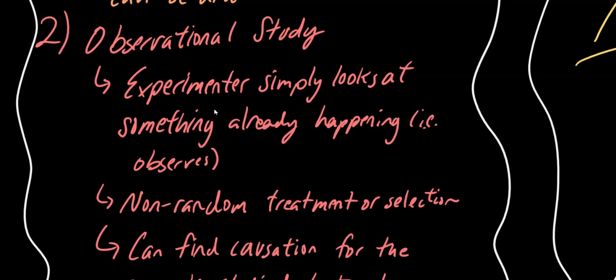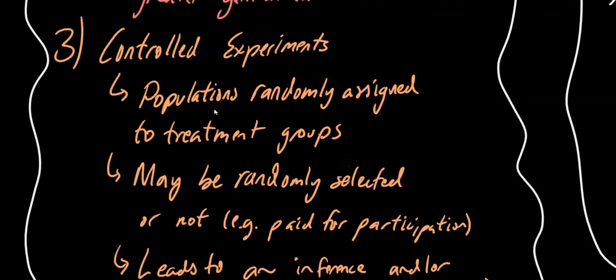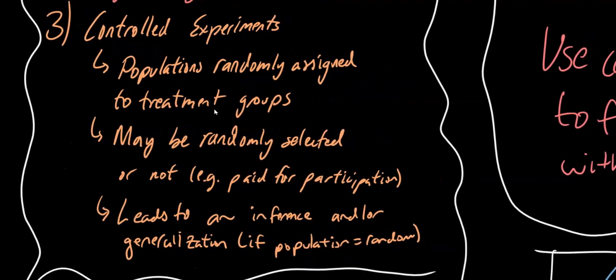Lastly, there's controlled experiments, which involve active experimenters who randomly assign different groups of people to treatment groups. Participants may or may not be randomly selected to participate. For example, brain MRI studies often involve some form of payment to the surveyed peoples because of a risk of radiation poisoning. From these studies, a generalization can be made if the participants are randomly selected, otherwise only an inference can be concluded because of potential bias.